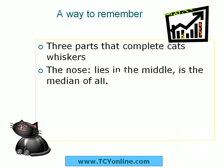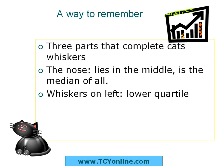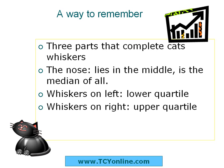First is the nose — it lies in the middle and is the median of all. It has whiskers on both sides: the whisker on the left is the lower quartile, while the whisker on the right is the upper quartile.